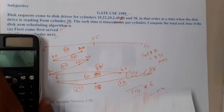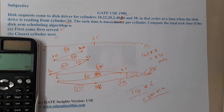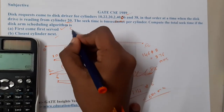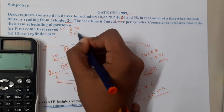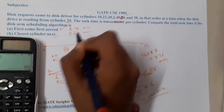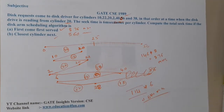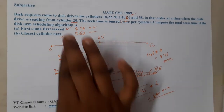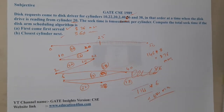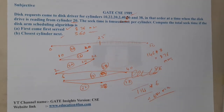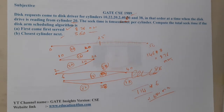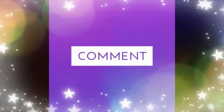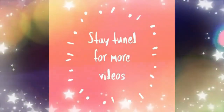So the FCFS answer is 876 milliseconds and the SSTF answer is 360 milliseconds. I hope everyone got a clear idea with respect to this question. This is a direct method-based question. In the next lecture we will continue with the next question. Thank you, thanks for watching — like, share, and subscribe for more videos.